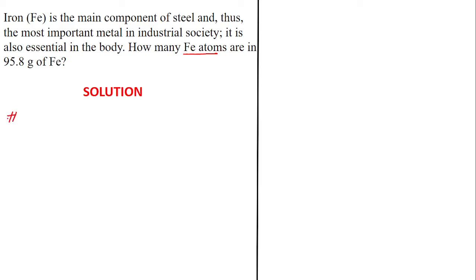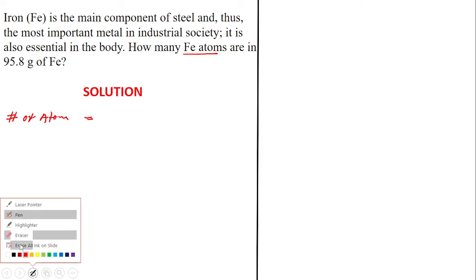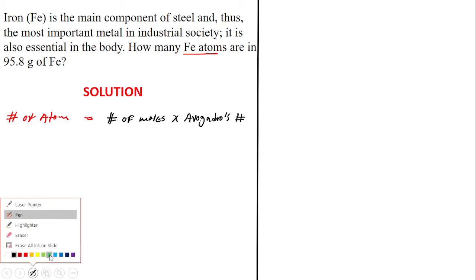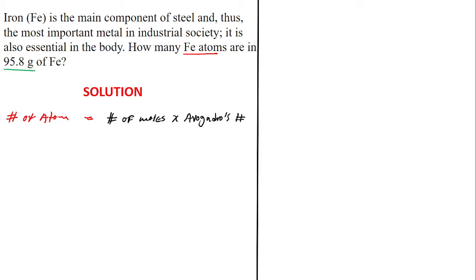What we need to do is find the number of atoms. The formula is: number of atoms = number of moles × Avogadro's constant. We've been given the mass in grams, and we can look up the molar mass, so the number of moles has not been given but can be calculated.